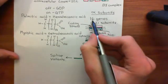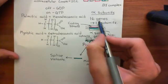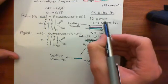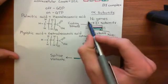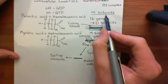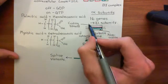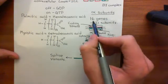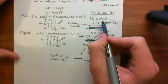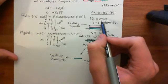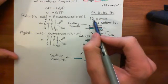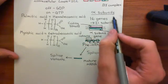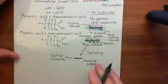This is how, even though we've got 16 genes for alpha subunits, we end up with 21 known subunits. These numbers will almost certainly evolve in the future — we will discover more splice variants, or potentially even more genes that code for alpha subunits of heterotrimeric G proteins — but at the present time of making this video, those are the correct figures.